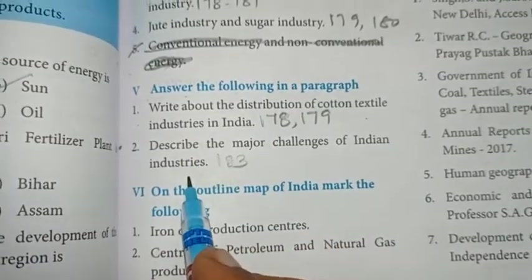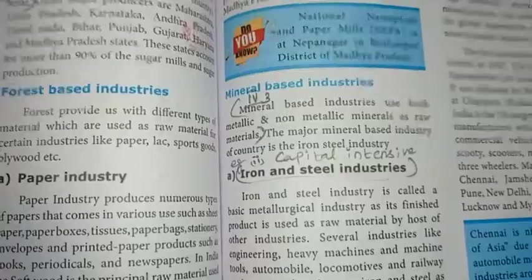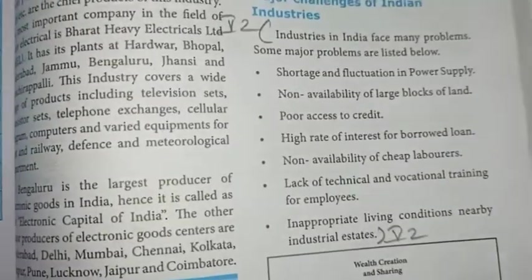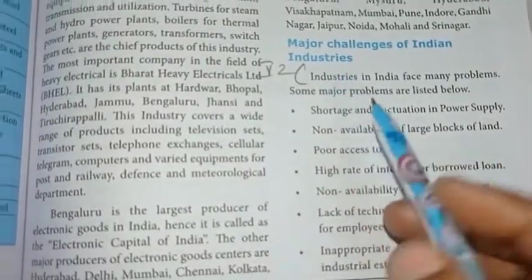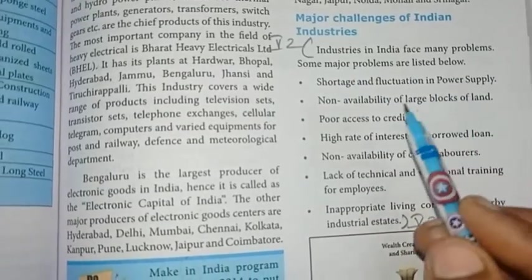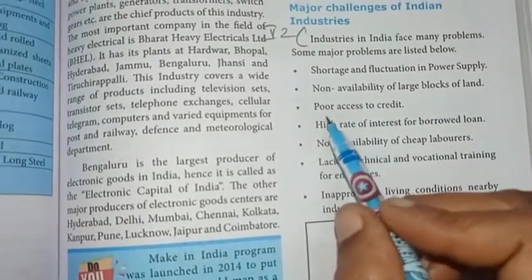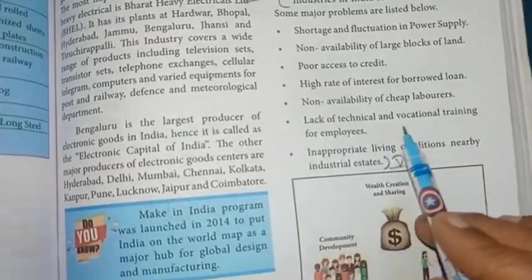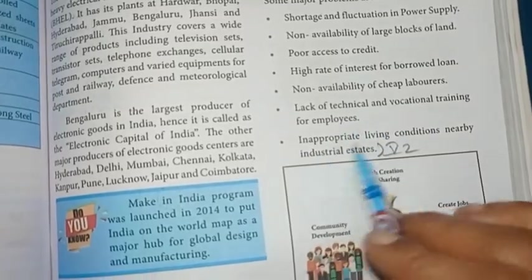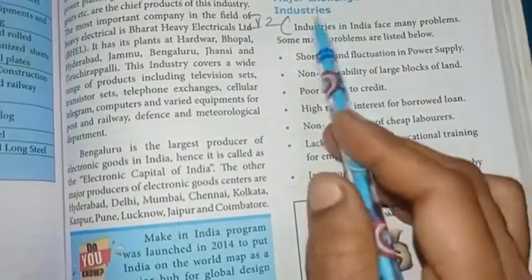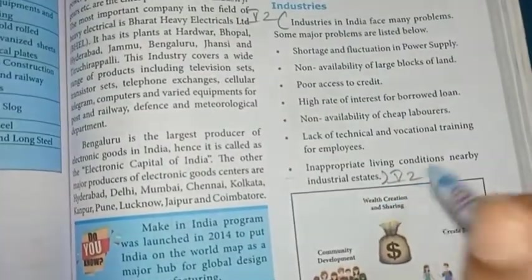Second one: describe the major challenges of Indian industries. Page number 183. Industries in India face many problems. The seven major challenges are: shortage and fluctuation in power supply; non-availability of large blocks of land; poor access to credit; high rate of interest for borrowed loans; non-availability of cheap laborers; lack of technical and vocational training for employees; and inappropriate living conditions nearby industrial estates.